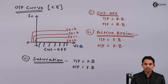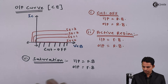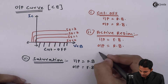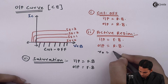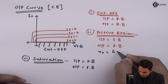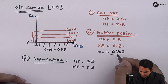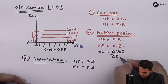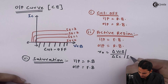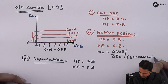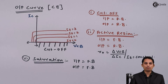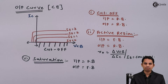The output impedance of common base amplifier is defined as change in output voltage VCB divided by change in output current IC keeping input current constant. So its value can be written as R0 equals change in VCB divided by change in IC keeping IE constant. This completes the output characteristics of common base amplifier. Thank you.